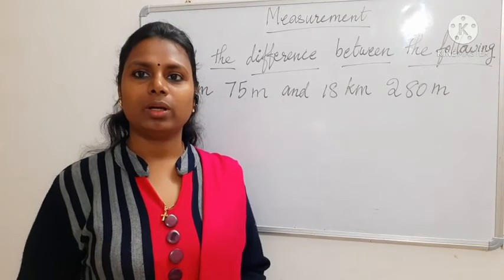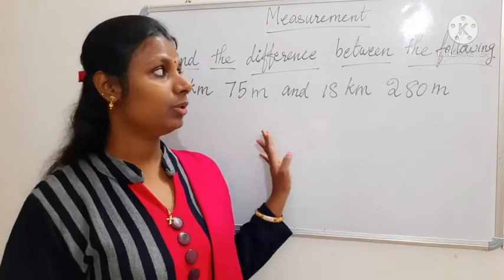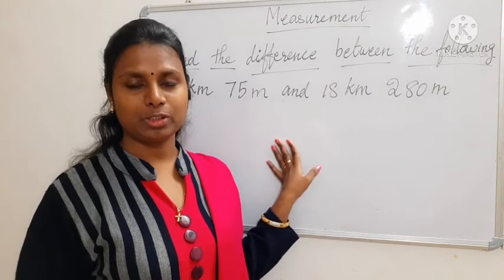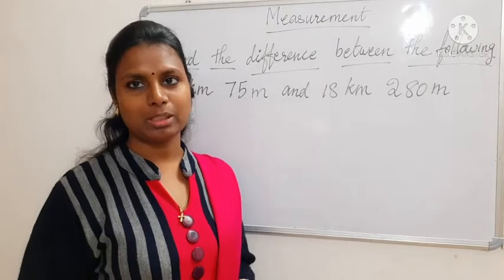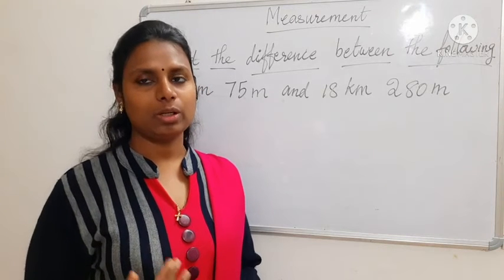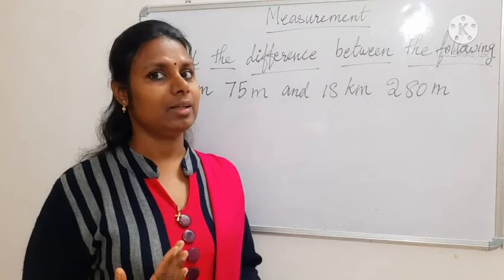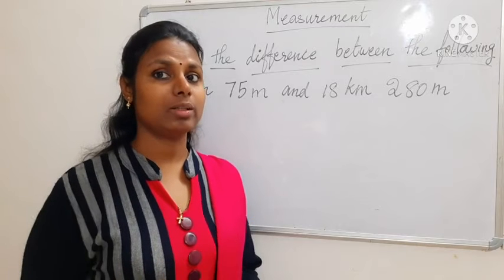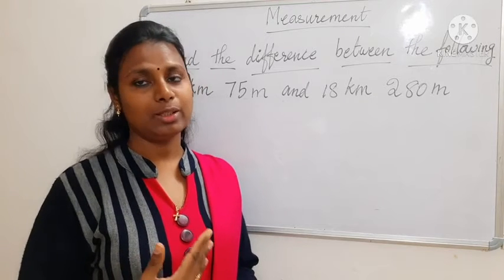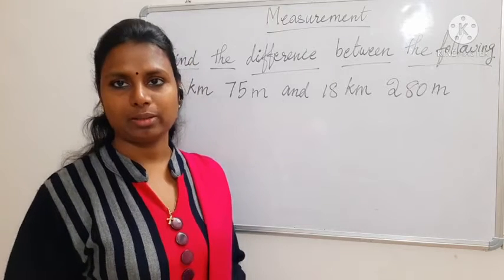Hi, so you have already done the addition of measurements chapter. Now you are going to do the subtraction. You have to follow the same thing — as usual you have to write the units, then see how many digits you have to write in those units, then write column wise, then you have to subtract.